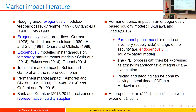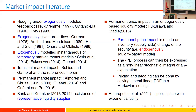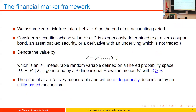Another very relevant paper is by Mocha and Westray in 2018, where they also assume a permanent price impact. Instead of considering a utility function as in Bank and Kramkov, Mocha and Westray assume that the valuation of the market maker is given by a convex risk measure. In this model, they prove that pricing and hedging can be done by looking at a semi-linear BSDE problem.